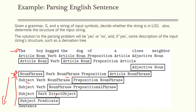Continuing the bottom-up parse: a preposition and noun phrase form a prepositional phrase; a verb, noun phrase, and preposition combine to form a predicate with a direct object; the direct object instantiates further into a noun phrase and preposition phrase; and the noun phrase comes from an article and noun. The subject and predicate together form the full sentence, completing the parse.